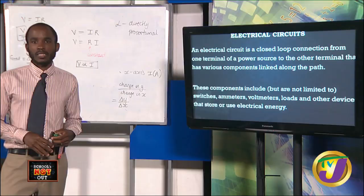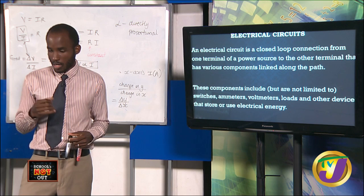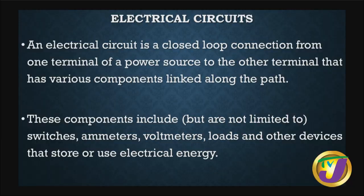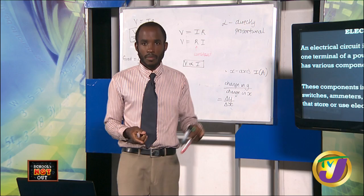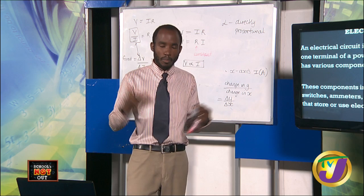Electrical circuits: an electrical circuit is a closed loop connection — from one terminal of a power source to the other. Power sources have two points: where current leaves and where it returns. Once you create a closed loop between the terminals, you have created a circuit. This loop has various components linked to it, including switches, ammeters which measure current, voltmeters which measure voltage, and loads which convert electrical energy to other forms.